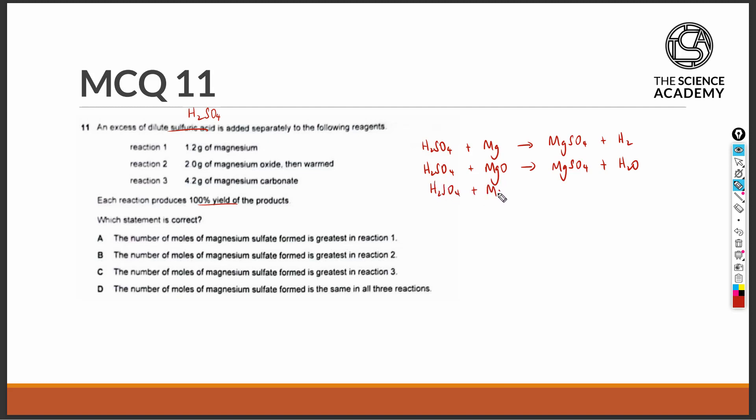Lastly, the acid is reacting with a carbonate of magnesium, forming the salt again of magnesium sulfate. And now two byproducts of carbon dioxide and water are formed.